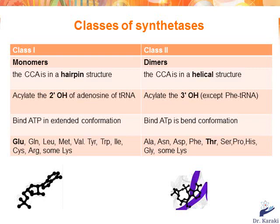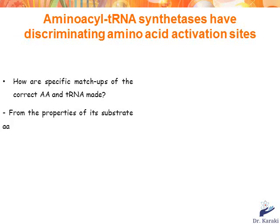Some examples of class I synthetases include glutamic acid, glutamine, and leucine synthetases. In class II, threonine synthetase is an example. Since there are 20 amino acids, there are 20 aminoacyl-tRNA synthetases. These enzymes are highly specific for a given amino acid and they rarely incorporate the wrong one.